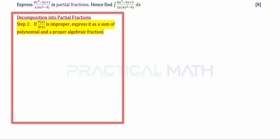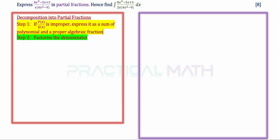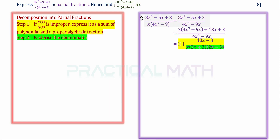In step 2, we are to factorize the denominator. So before I go on to step 3, let us first start off with part 1. We are given this fraction, and for us to use the alternative method as mentioned earlier, I will have to expand the denominator out, which gives us 4x cubed minus 9x.